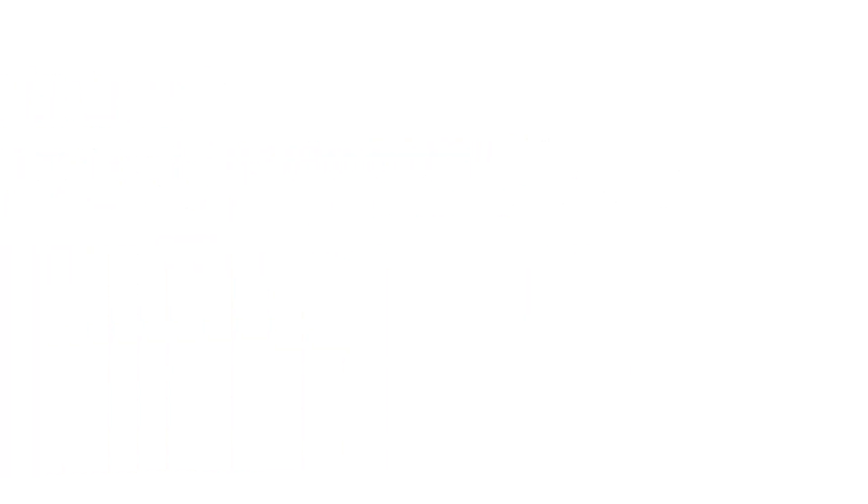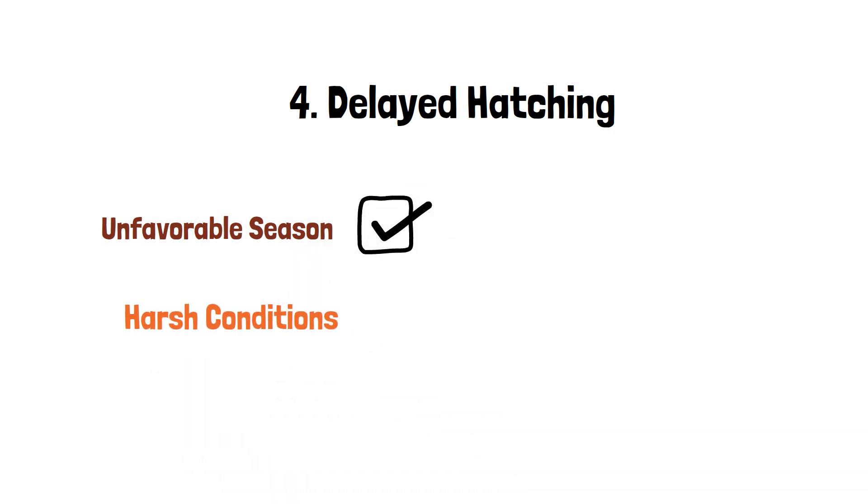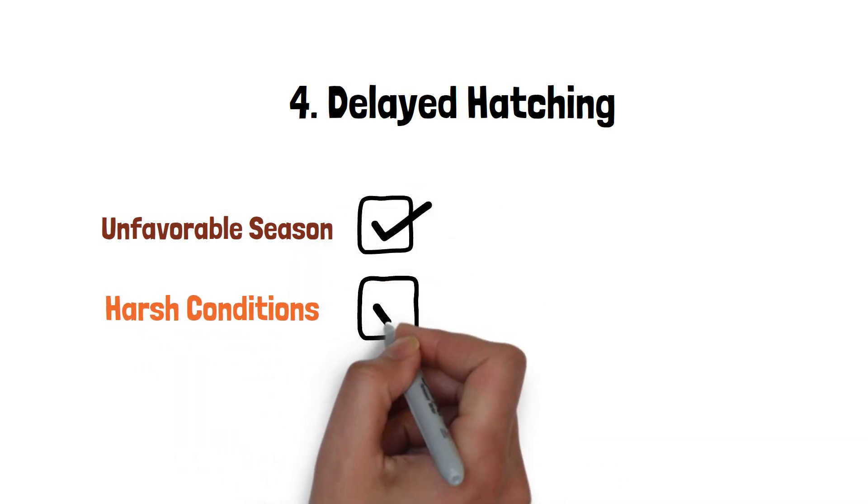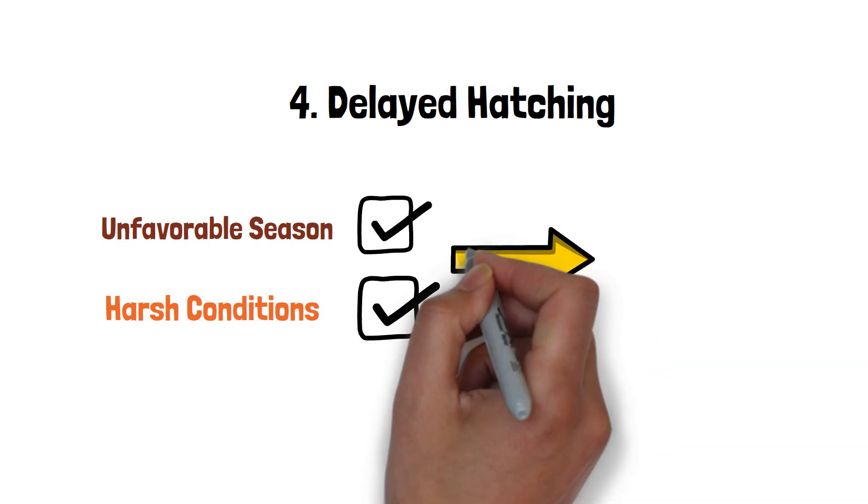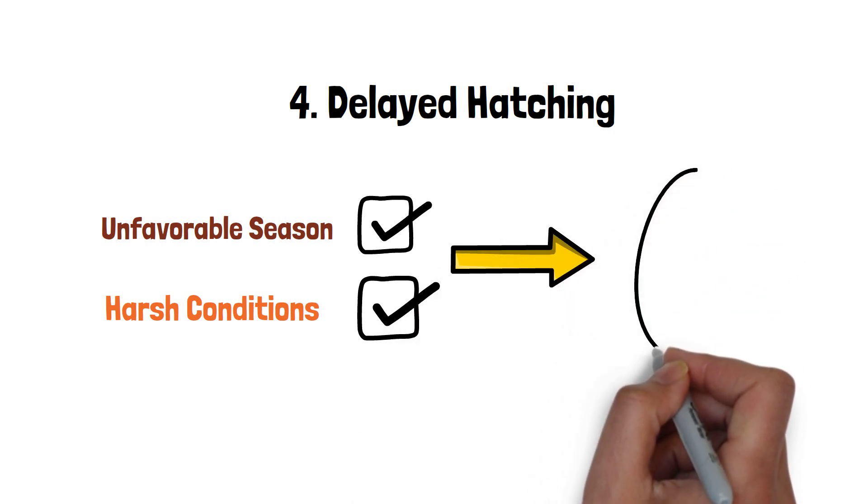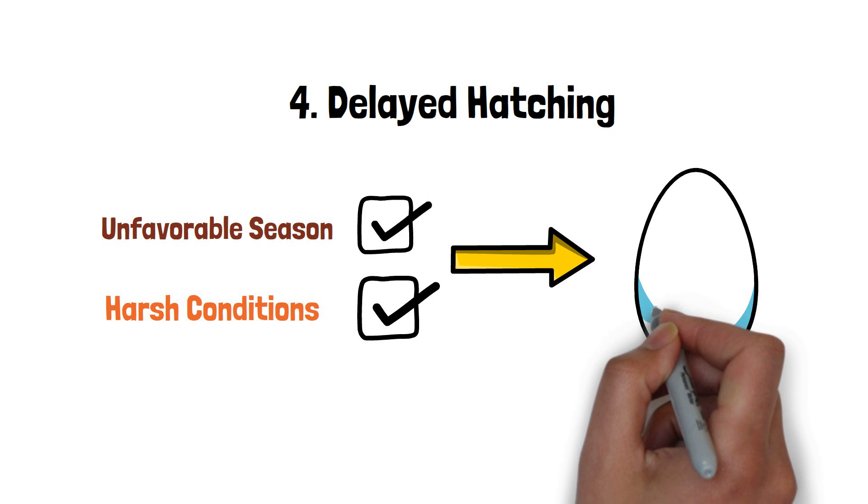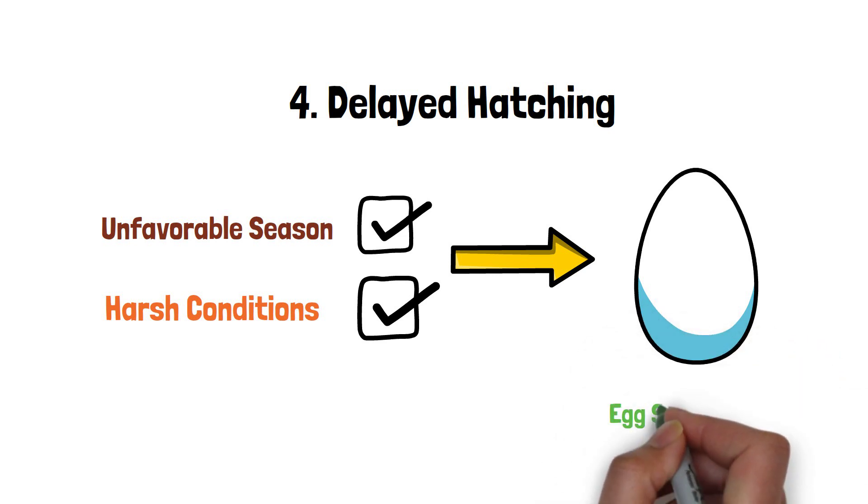4. Delayed hatching. Snail eggs can exhibit a phenomenon known as delayed hatching. This adaptation allows the eggs to remain dormant until favorable environmental conditions arise. By delaying hatching, snails can avoid unfavorable seasons or periods of harsh environmental conditions, increasing the survival chances of their offspring.